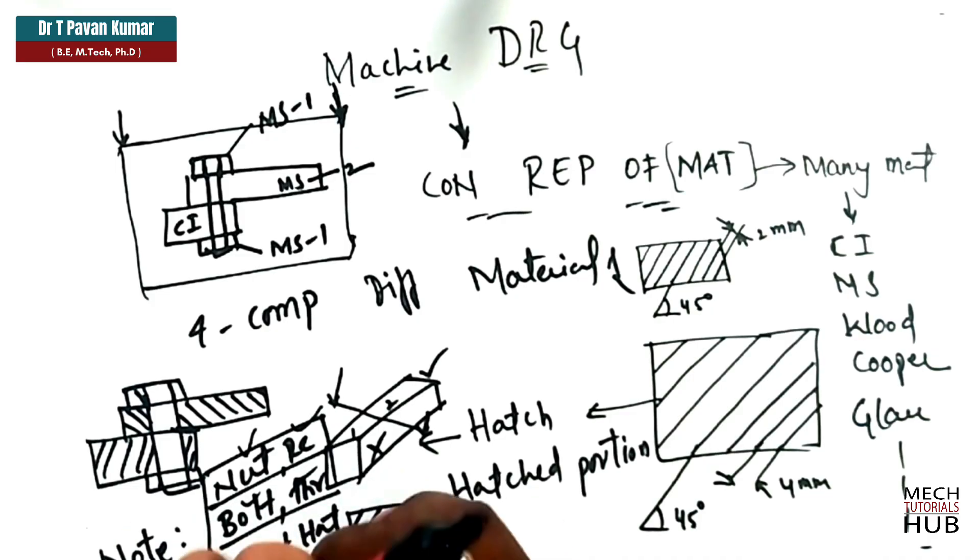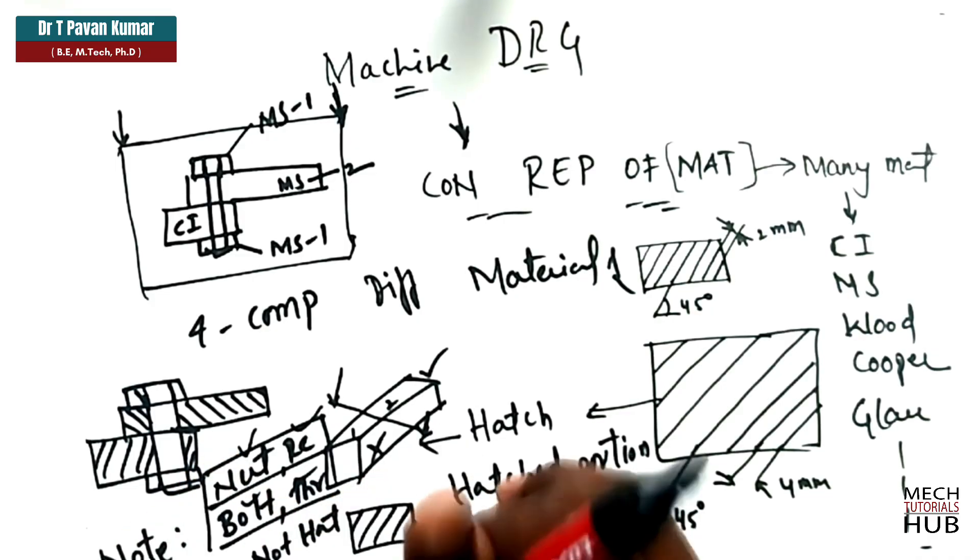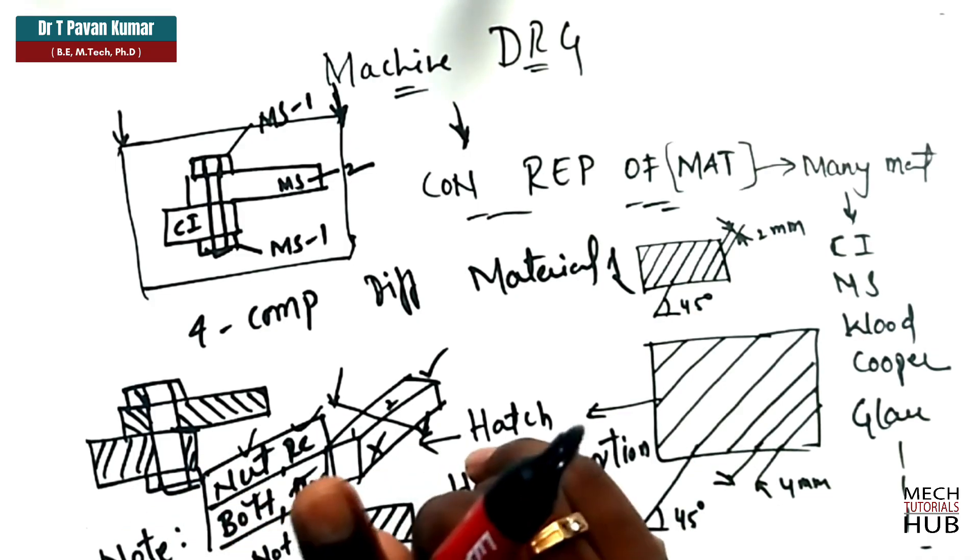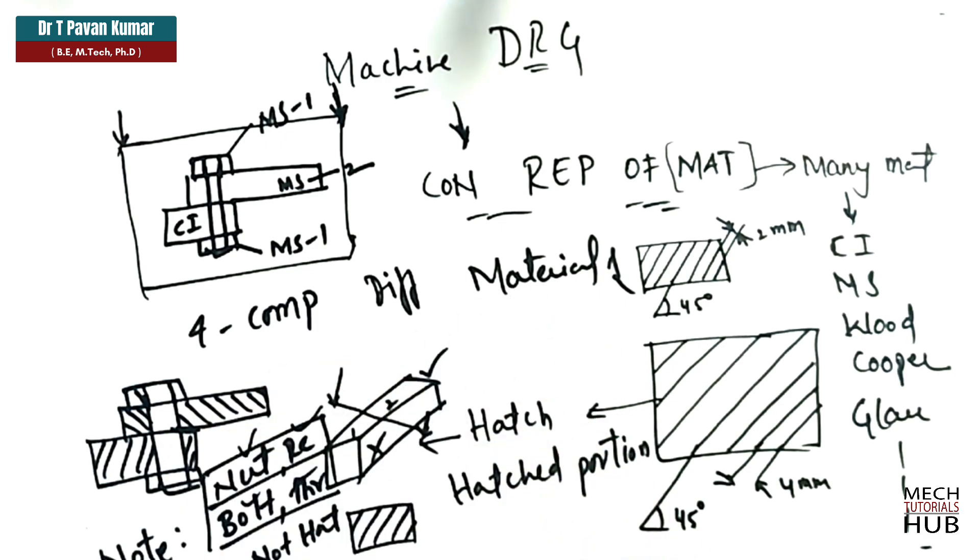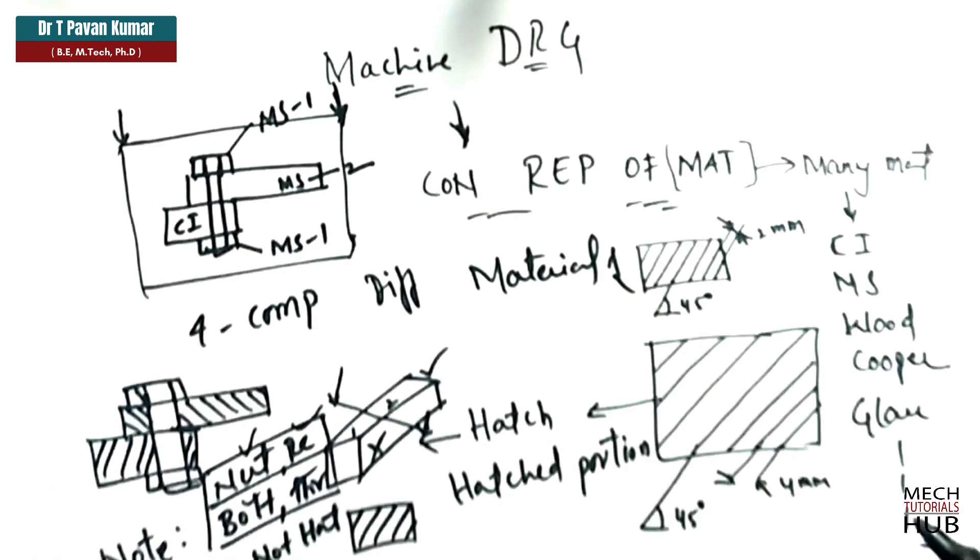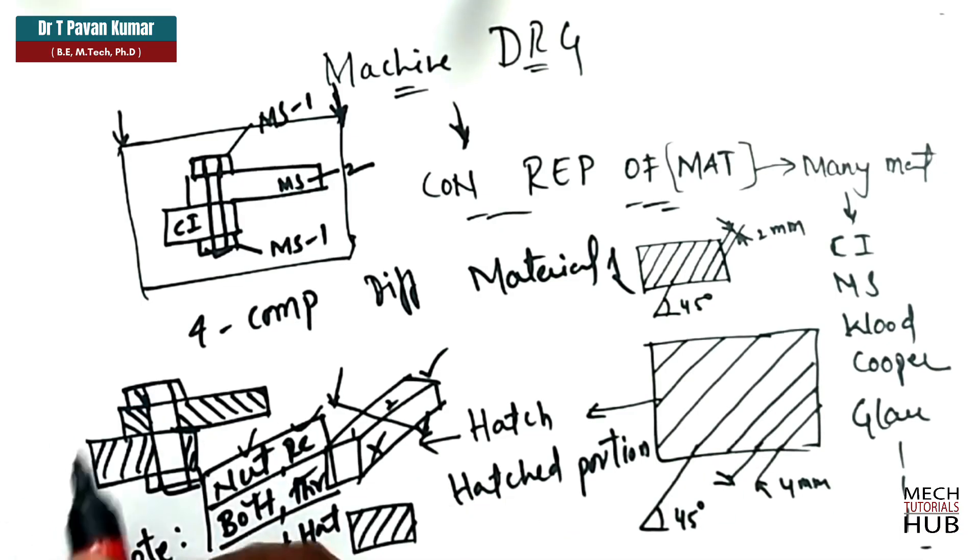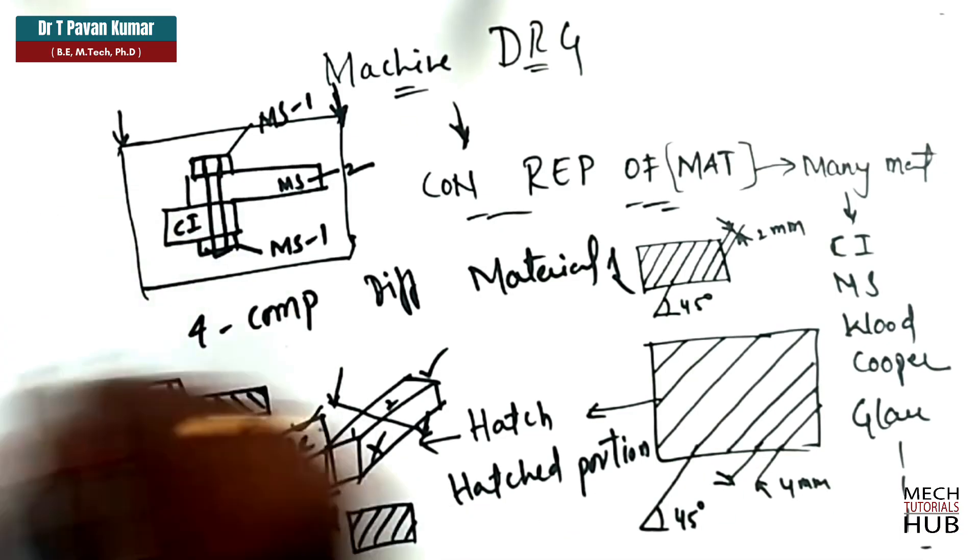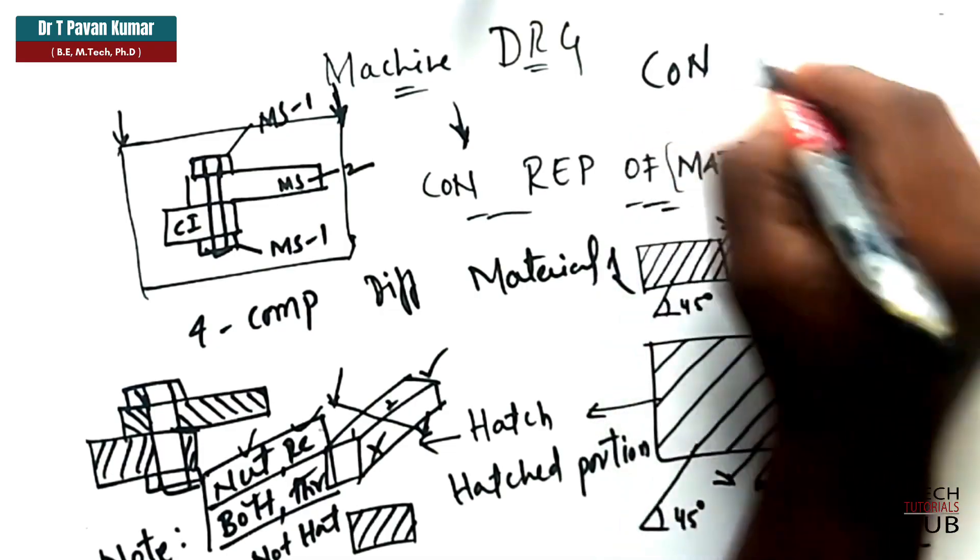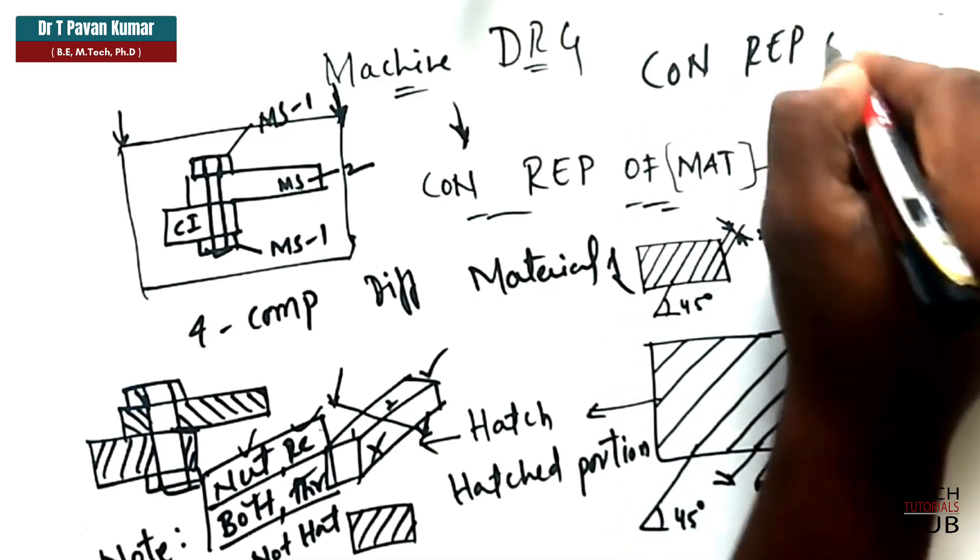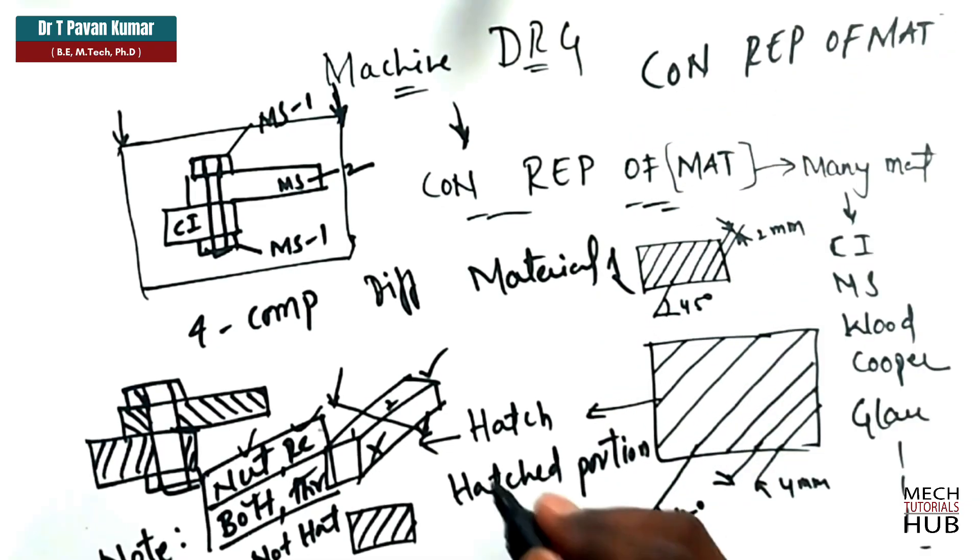So, what we try to do? We will try to show with a section view. Sectional view what you call. When you cut the model, internal shapes or internal intricate shapes, internal components can be shown externally with the help of sectioning. That is the reason we do section the component. That is one case. After sectioning,